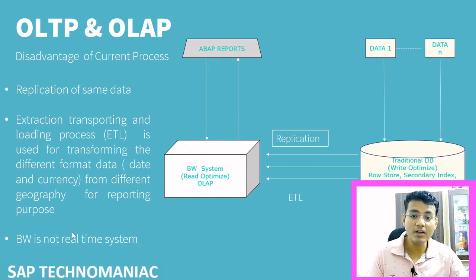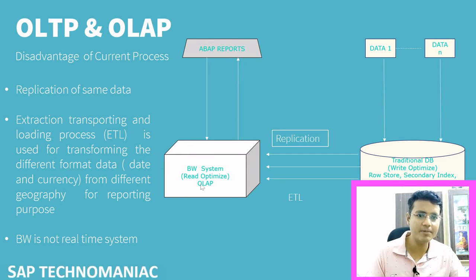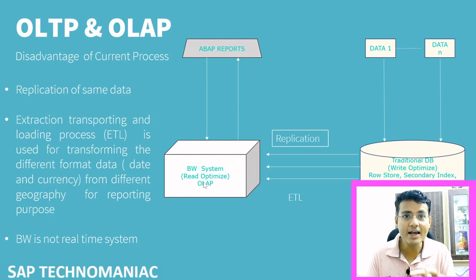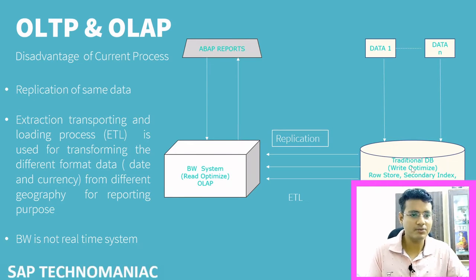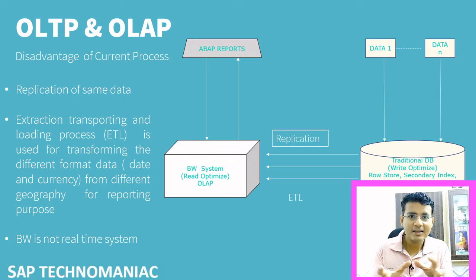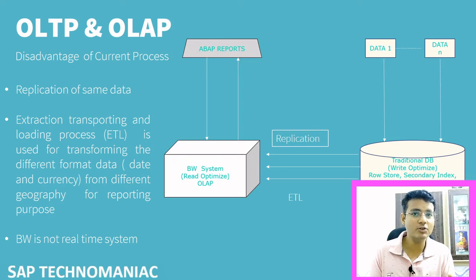The second disadvantage is that we are not having real-time data in the BW system. Whatever transactional processing we do in ECC has real-time data, but in BW, since we are doing ETL either monthly or quarterly, there is no real-time data available. Real-time data is always available in ECC, but it needs to be copied to the BW system, so real-time data will not be available there for analysis. That is the second disadvantage of using OLTP and OLAP separately.